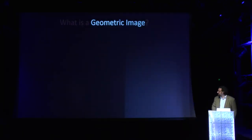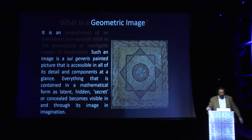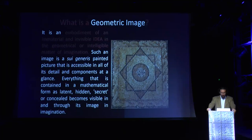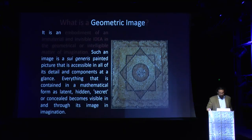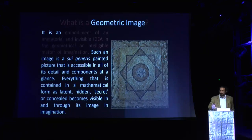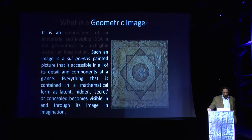Such an image is sui generis — it exists on its own terms, a painted picture accessible at a single glance. That's the advantage of geometry: it offers the formless principle in one form, at one glance. Everything that is contained in a mathematical form — what is latent, hidden, secret, or concealed — becomes visible in and through its image in the imagination.